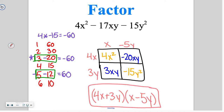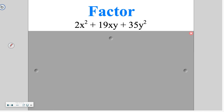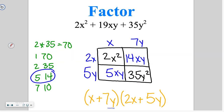Go ahead and try this next one on your own. Multiply — we need the factors of positive 70. We're going to use 5 and 14 to get to 19. Split it up into the box and we end up with our final answer.